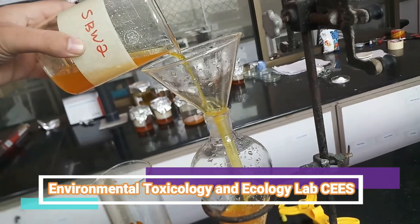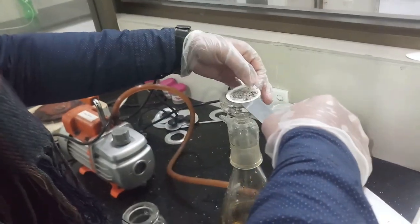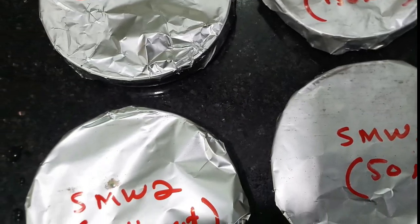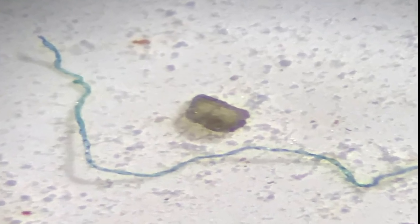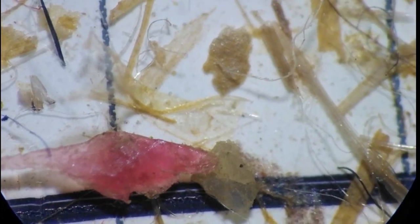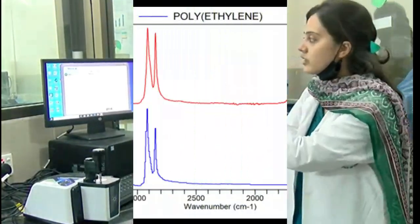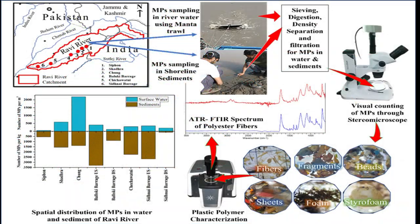All collected water and sediment samples were analyzed for microplastics through wet digestion, density separation, and filtration. The filtered samples were further subjected to microplastics counting under a microscope. A variety of microplastics such as fibers, sheets, fragments, and styrofoam were identified using FTIR analysis, and some results have been published in well-reputed international research journals.